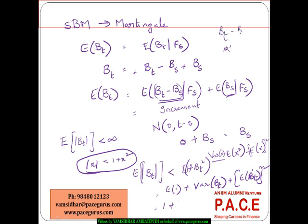Since B_T minus B_0 follows a normal distribution with mean 0 and variance T, the variance of B_T is T and E[B_T] is 0. Therefore E[|B_T|] is less than 1 plus T, and since T is finite, 1 plus T cannot be infinite. So E[|B_T|] is less than infinity, confirming that standard Brownian motion B_T is a martingale.